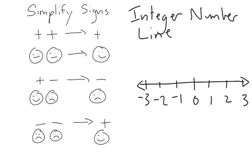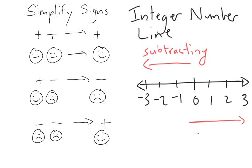You'll notice that the positive signs are not written in — it is considered redundant. When you're subtracting a number, you're actually moving further left on the integer number line. And if you're adding a number, you're actually going further right on the integer number line.